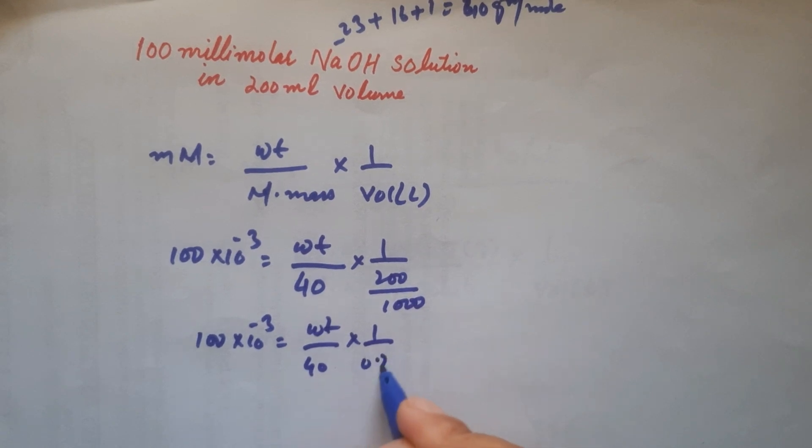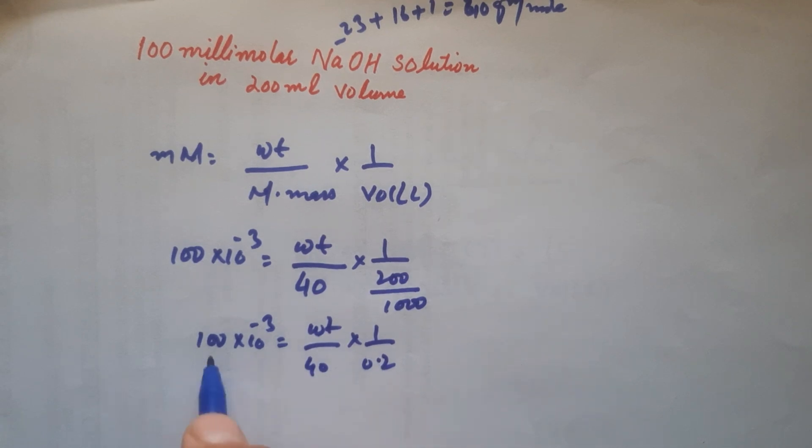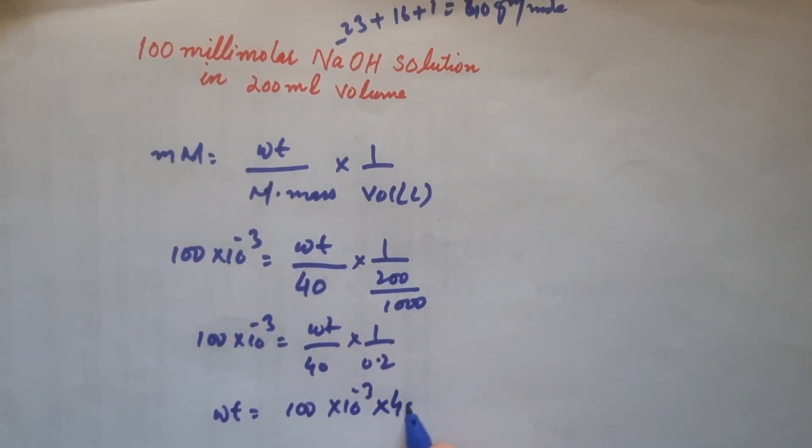So 100 times 10 to the power minus 3 equals weight over 40, and you can write this like 0.2. Now multiply everything: 0.2, 40, and 100 times 10 to the power minus 3. Weight equals 100 times 10 to the power minus 3 times 40 times 0.2.